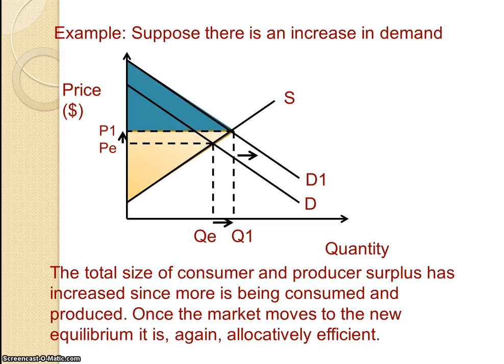Consumers are getting more satisfaction out of this product now, for whatever reason. Both areas increase and society as a whole benefits to a greater extent than before. Ultimately, this new market, once it's at equilibrium, is allocatively efficient. Good luck with allocative efficiency, consumer and producer surplus.